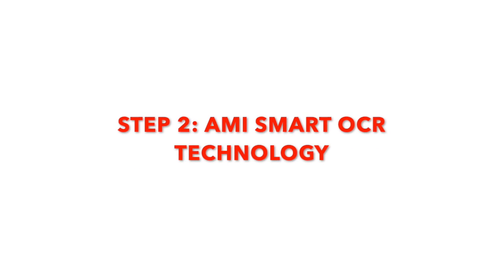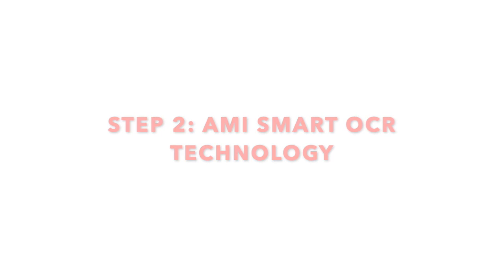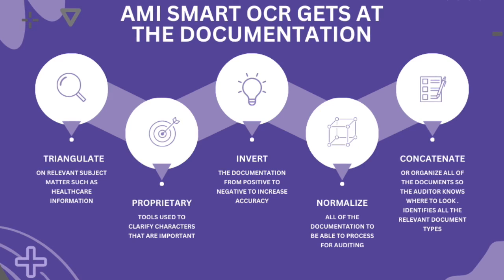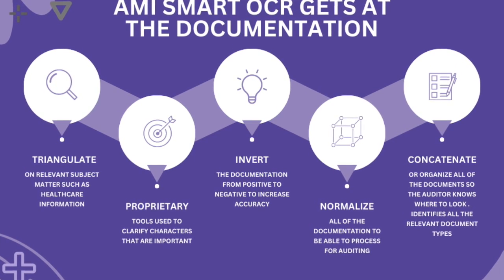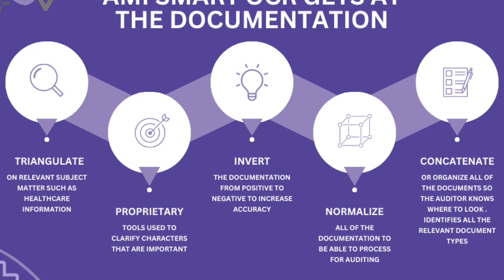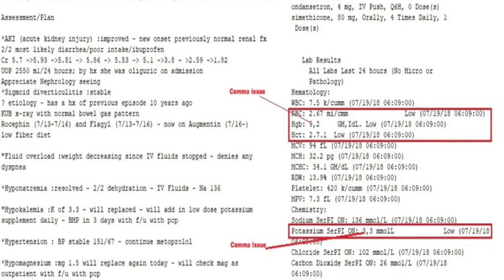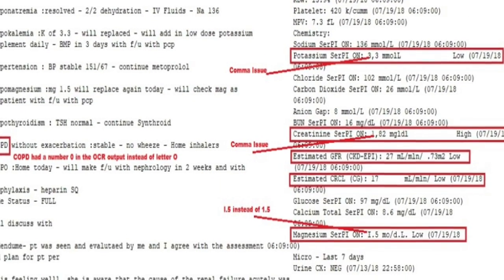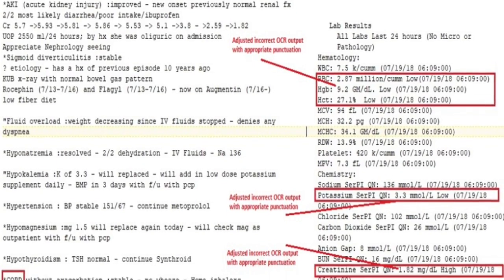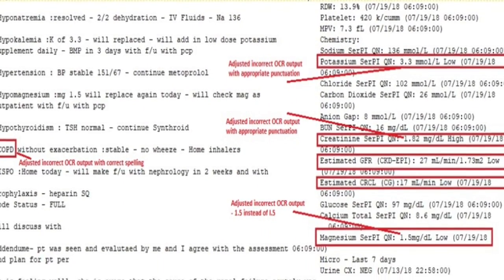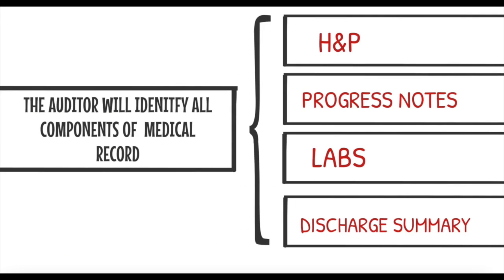Step two is AMI's Smart OCR, where needed for picture files, PDFs, and other images. AMI's proprietary OCR does all the error corrections in order to normalize the documentation. The Smart OCR searches for and clarifies characters — is the 1 a one or is it an L? Is an O an O or is it a zero? Are dots on the page periods or are they background noise? The AMI Smart OCR solves this problem that typical OCR solutions don't address, and then concatenates the documents — organizing them chronologically, since date and time are very important in the medical diagnosing process, and because guidelines are so date-sensitive for the correct evaluation of care, including payment reimbursement.